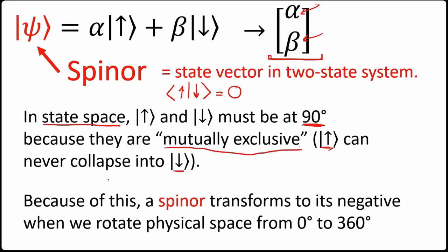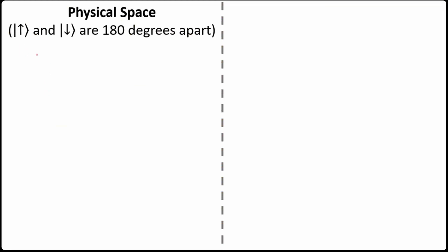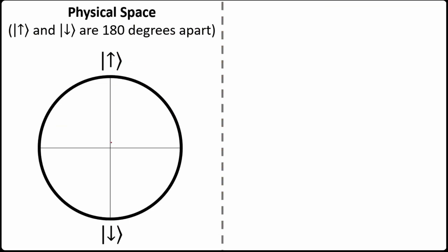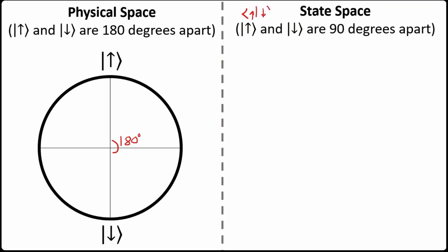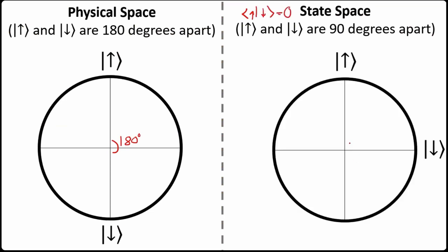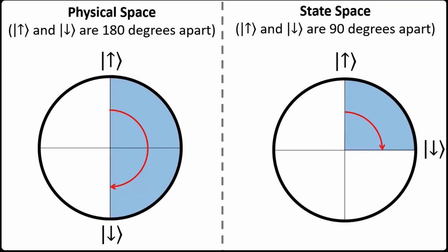To explain this, consider that in physical space, up and down are simply 180 degrees apart. But in state space, because up and down are orthogonal, they are 90 degrees apart. There is an angle-doubling relationship between the two spaces, which means that rotating a state all the way around in physical space produces only a negative sign in state space. A 180-degree rotation in physical space corresponds to a 90-degree rotation in state space.